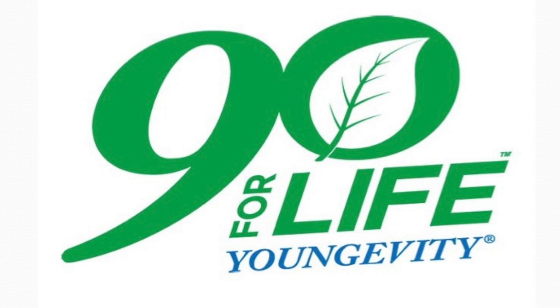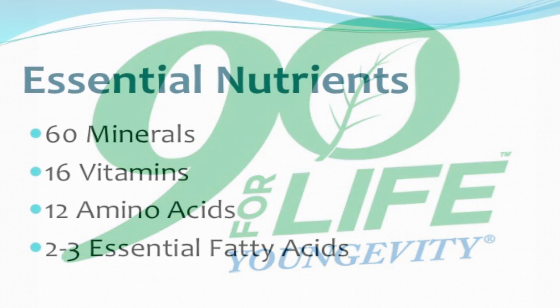How do we do that? We do that using the 90 essential nutrients. So I'd like to tell you what the list of these essential nutrients are. They consist of the big heavy hitters, 60 minerals, 16 vitamins, 12 amino acids, and two essential fatty acids. And this is the currency of life.